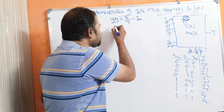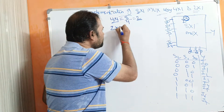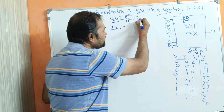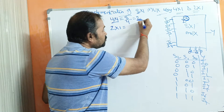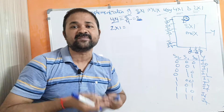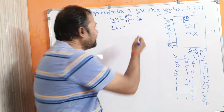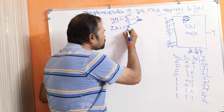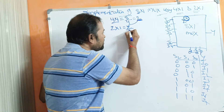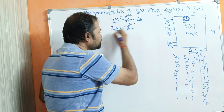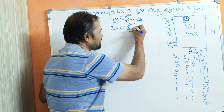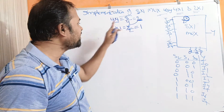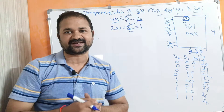Next, we need to find out how many 2 by 1 multiplexers are required. We got 2 from the previous step — we require 2 four-by-1 multiplexers. So we divide this 2 by the number of data inputs of the 2 by 1 multiplexer, which is 2. That gives us 1. So at the second level, we require 1 two-by-1 multiplexer.